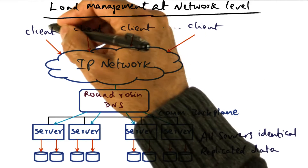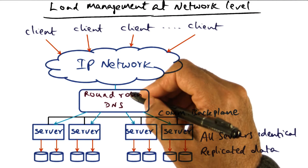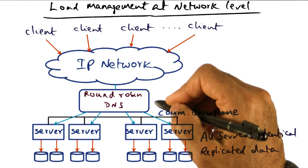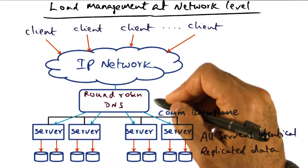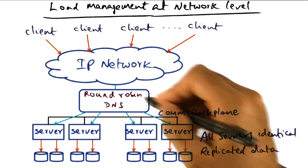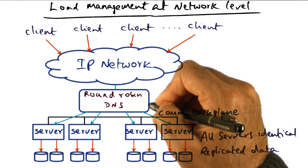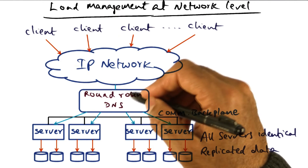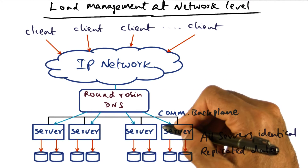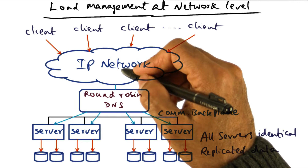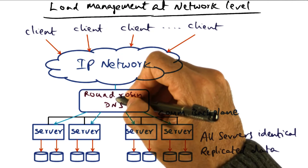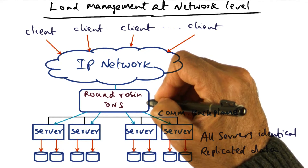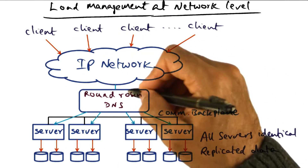When client requests come in, they all have the same domain name in order to reach this particular service. If you say gmail.com, then depending on how the server is architected, the request from a particular client may go to a particular site. The domain name server, acting as a load manager, will direct the incoming client request to one of the servers. So it is giving different IP addresses, even though the domain name the client is using is exactly the same.